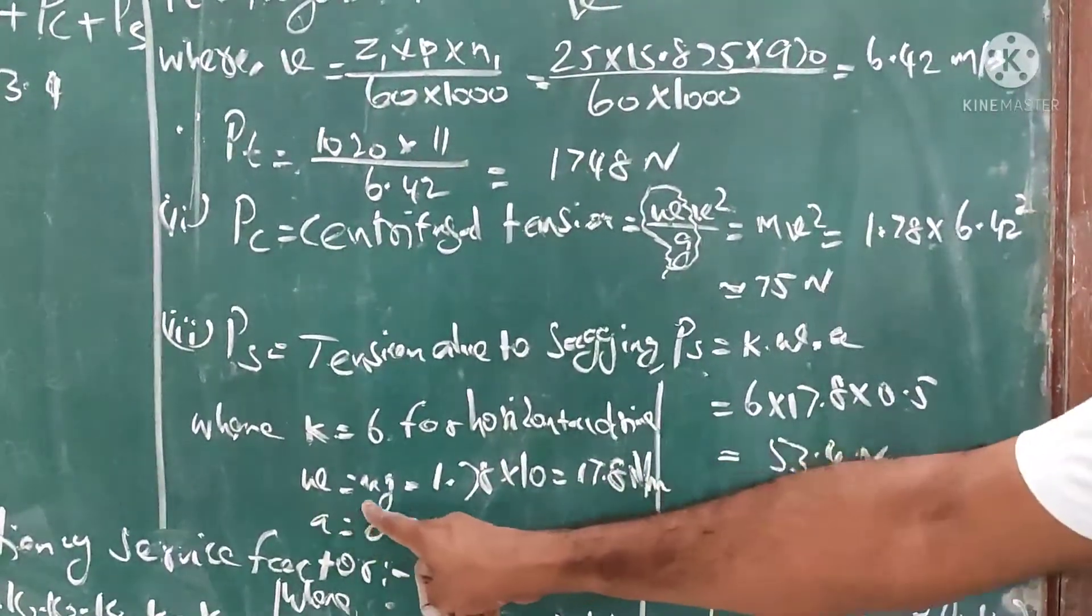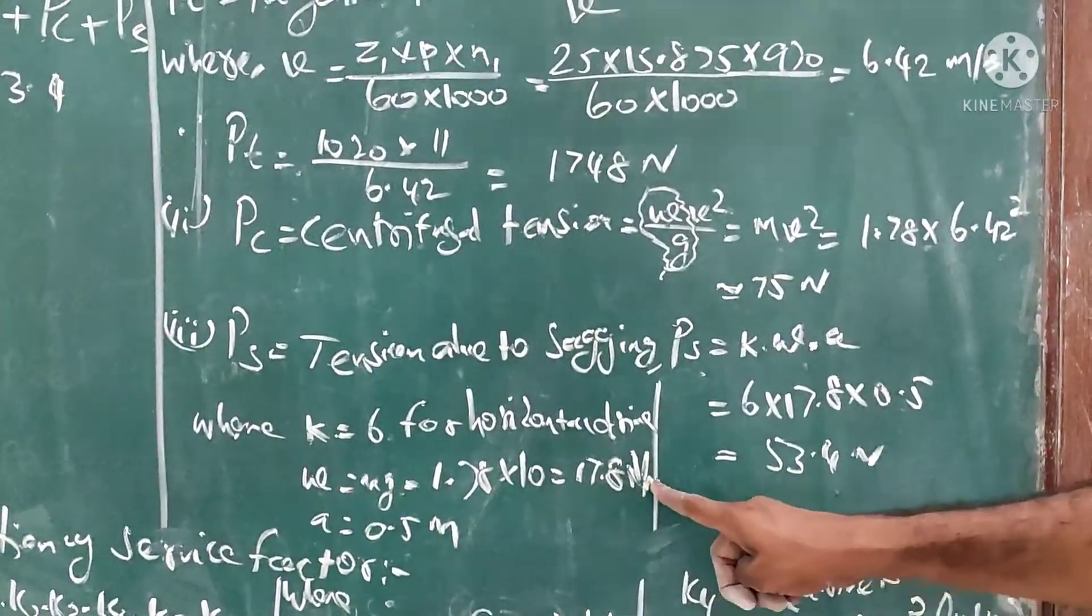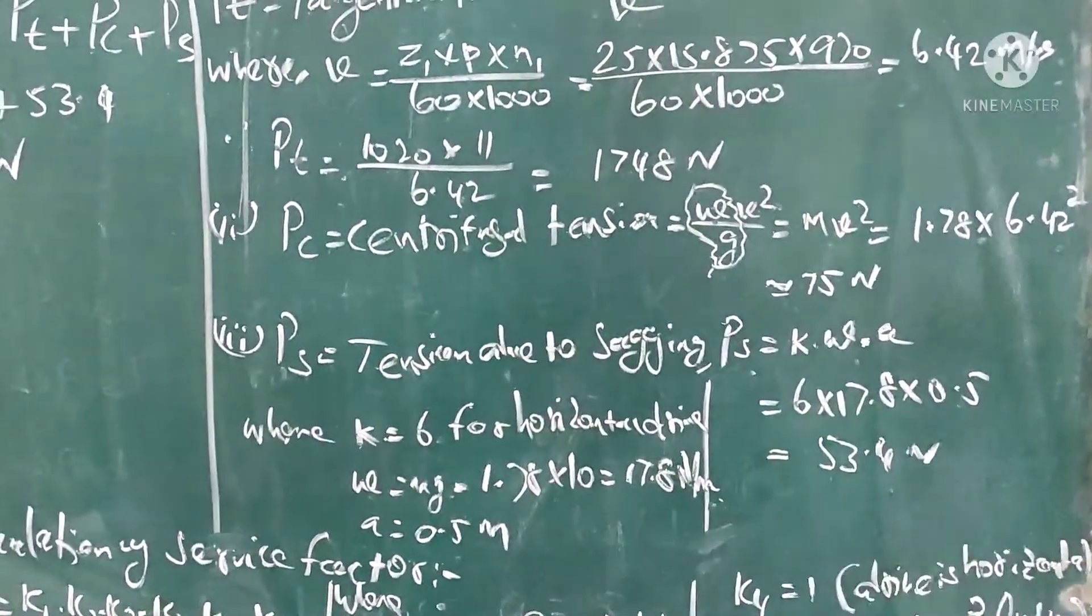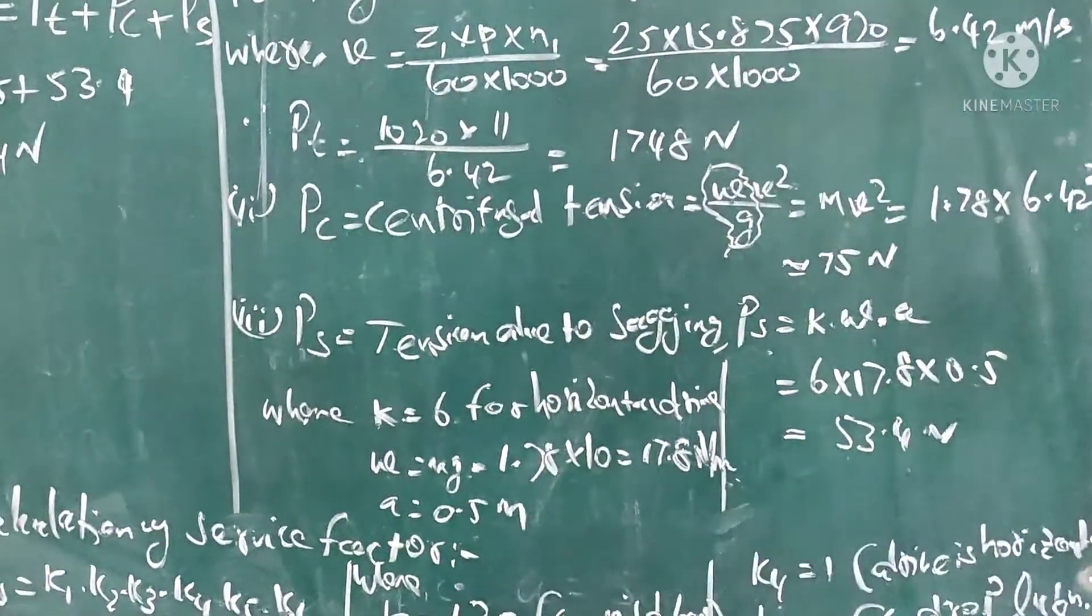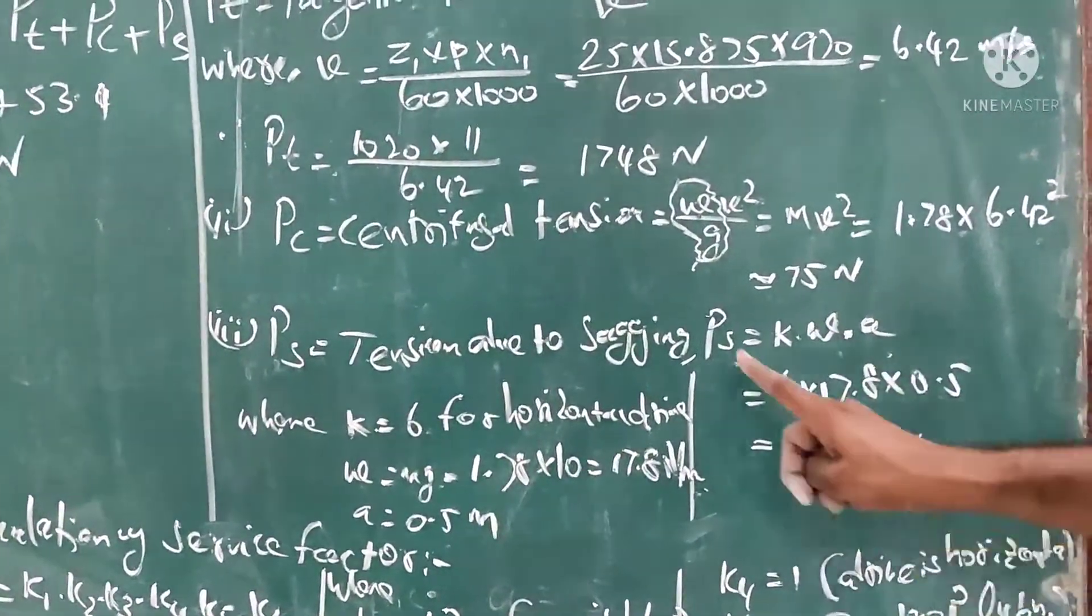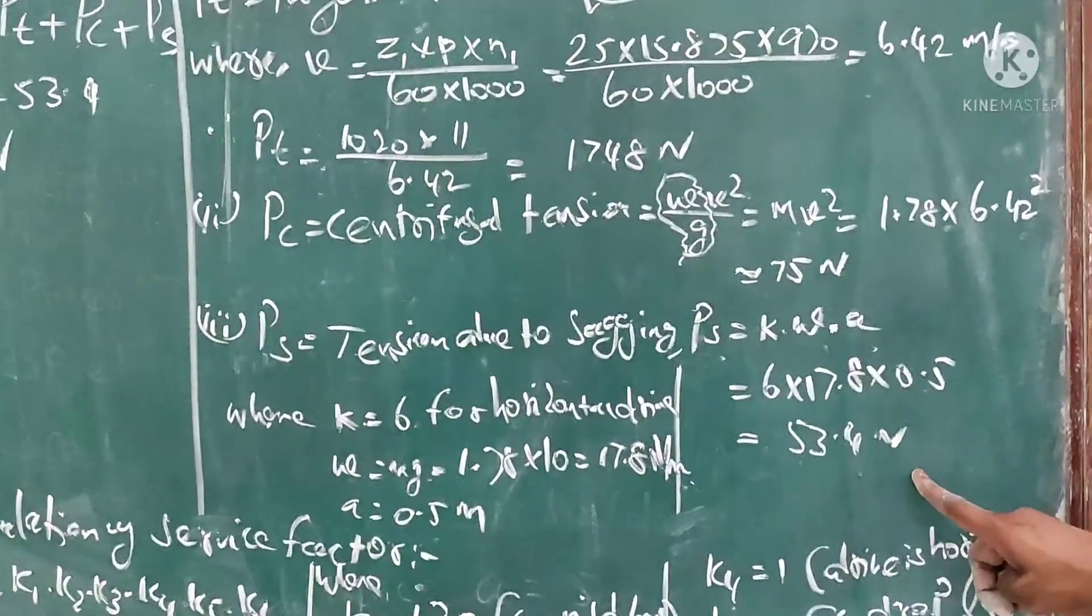PS is tension due to sagging, PS = K × τU × A, where K = 6 for horizontal drive, τU = M × G = 1.78 × 10 = 17.8 N/m, A = 0.5 meter. Multiply these three values, we get PS = 53.4 Newton.